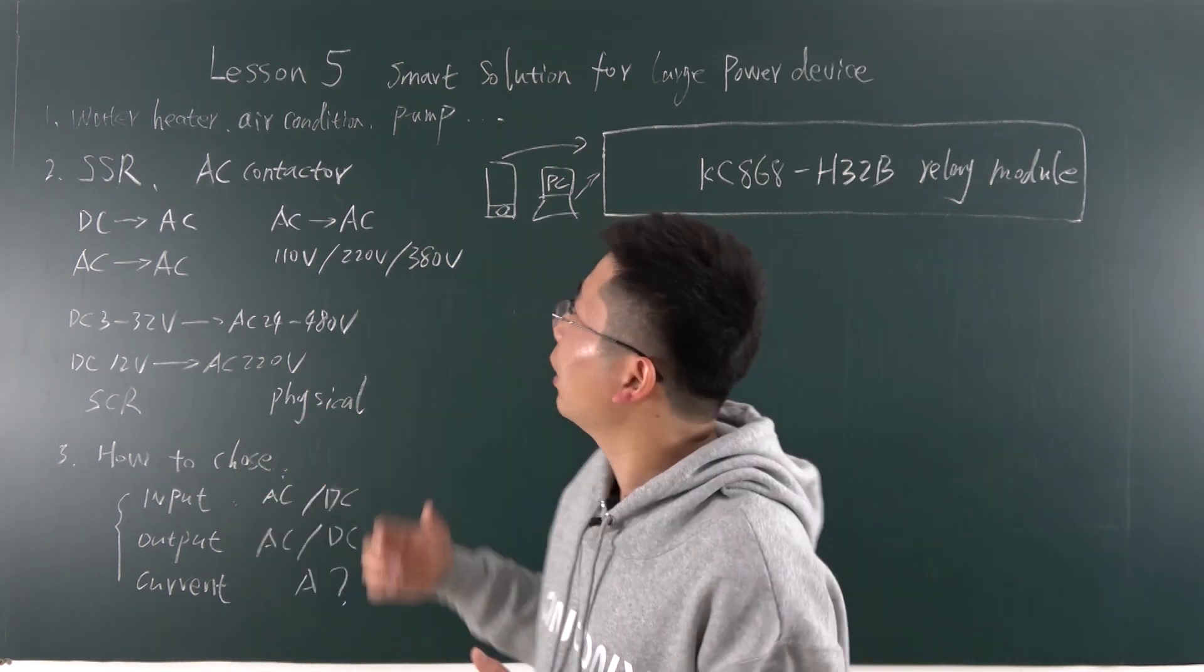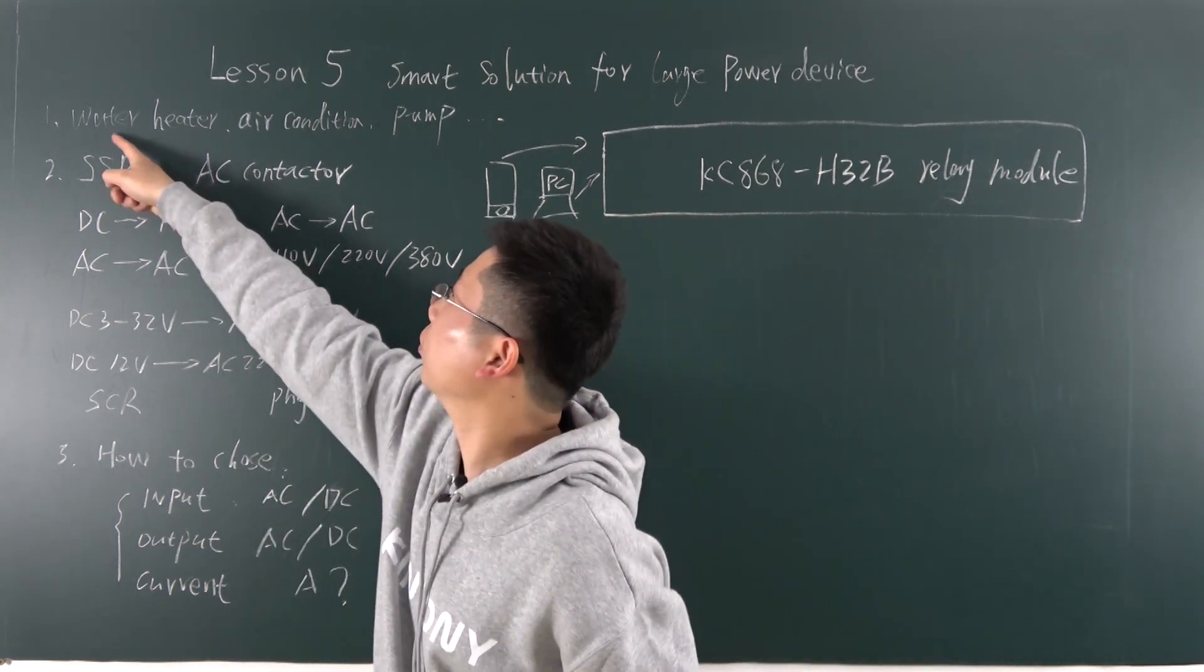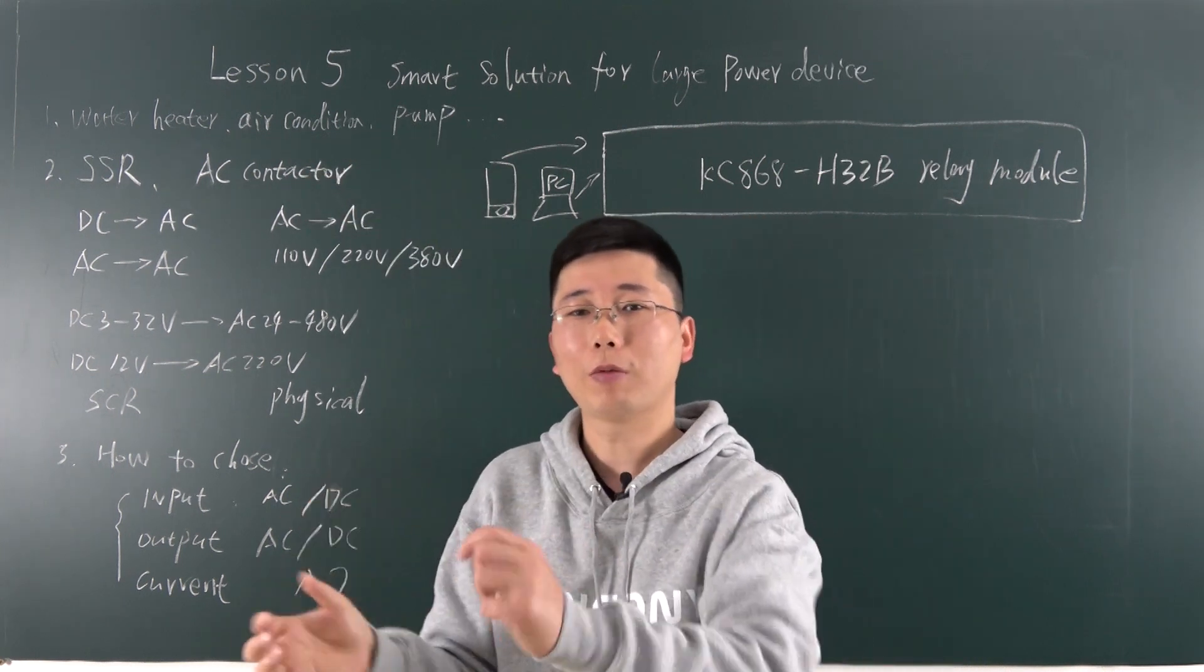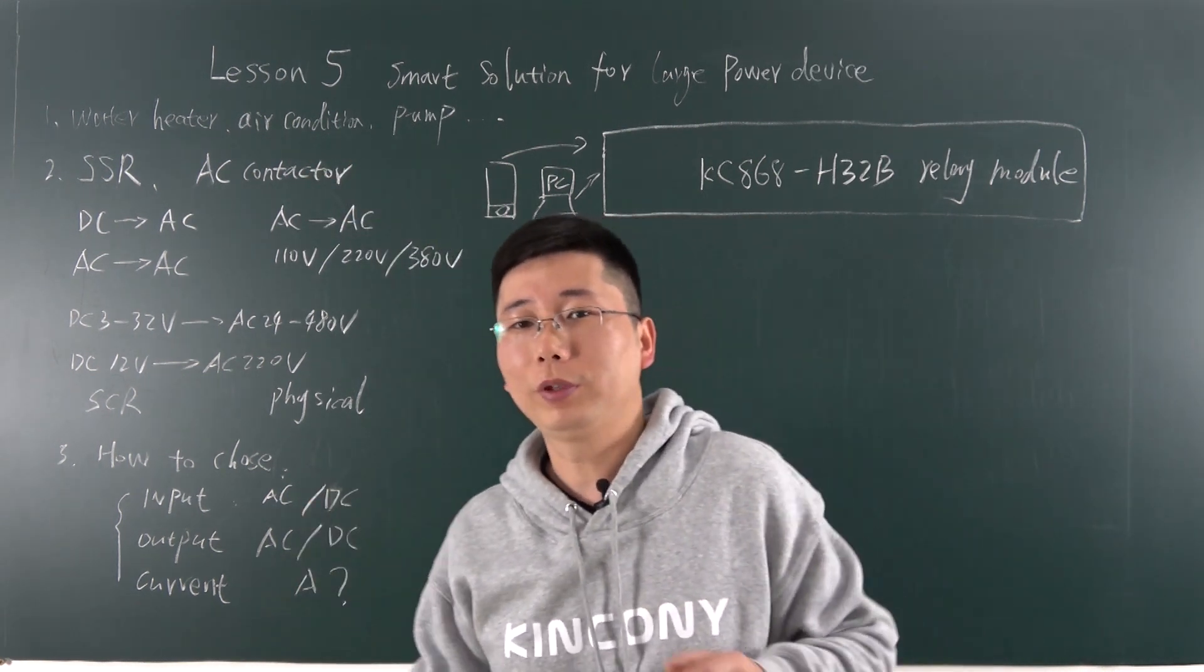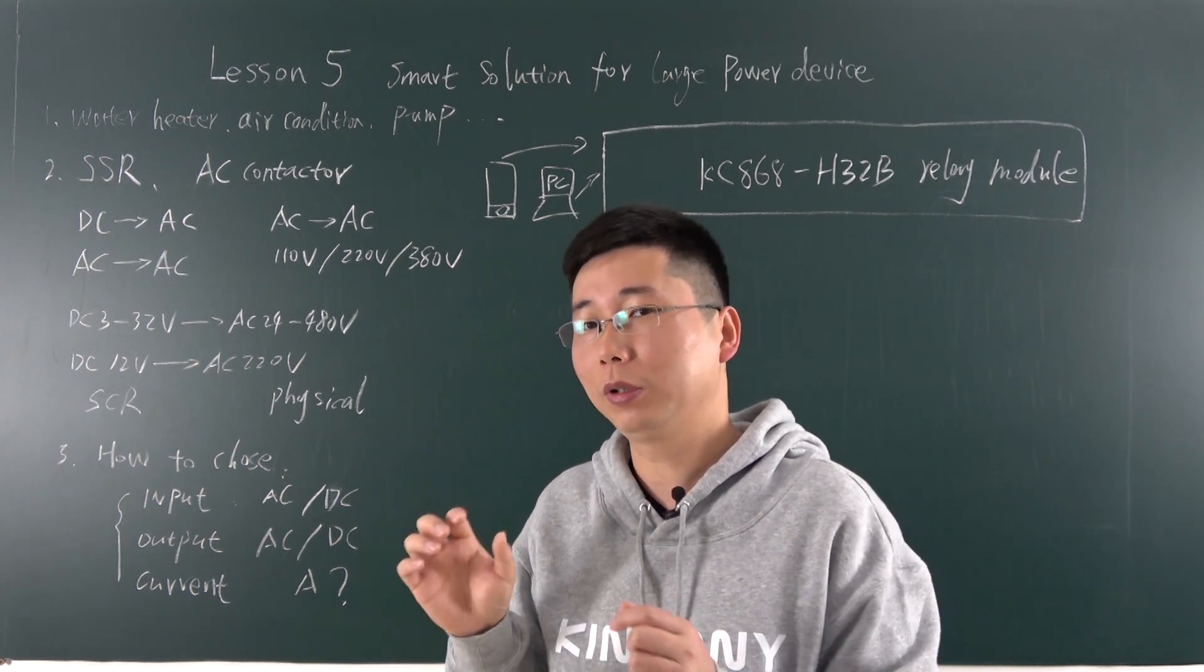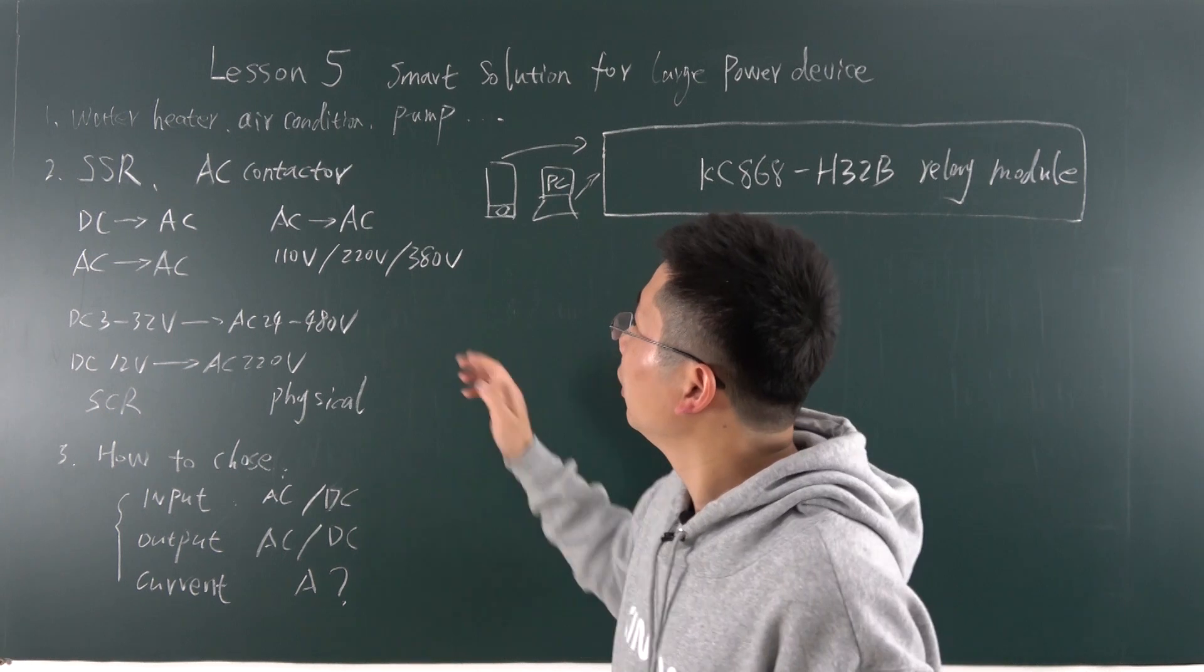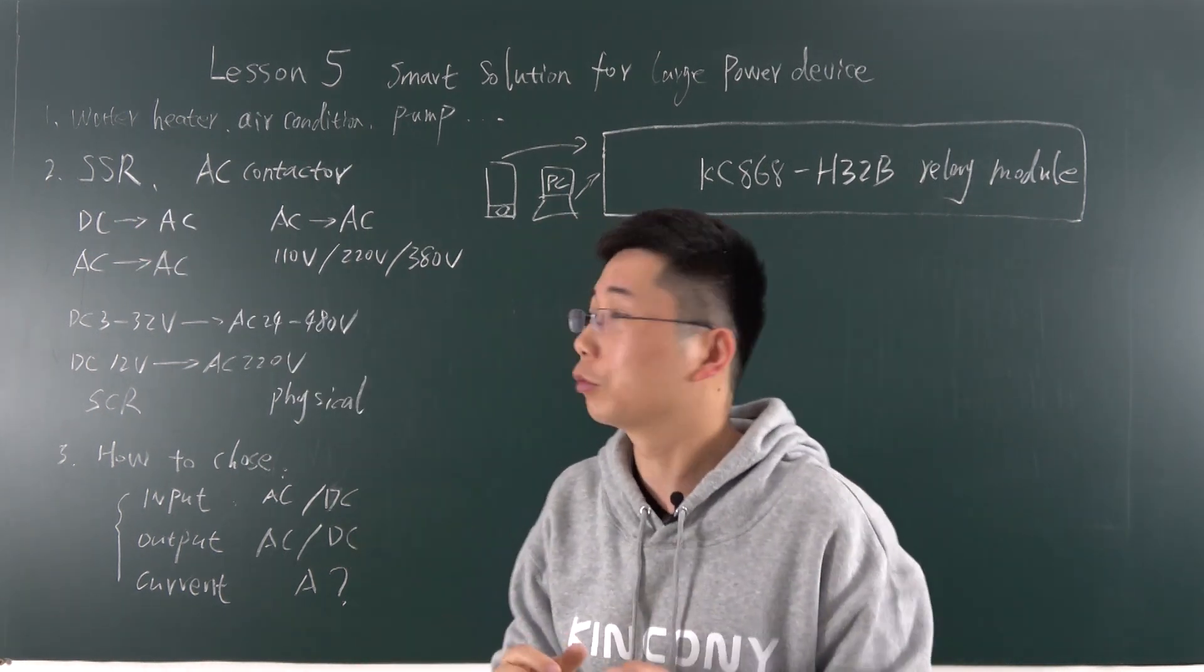So if you have the large current like the water heater and air conditioner and the pump, this power is very large. If you use the relay controller directly, it will be a bad thing. So you need a device to extend the large power controller.